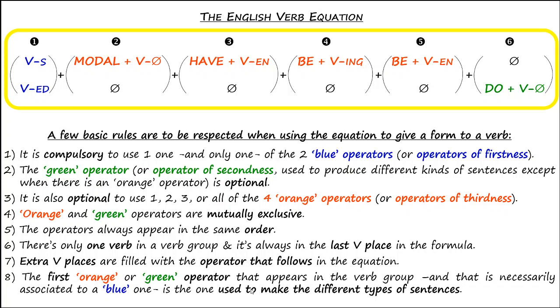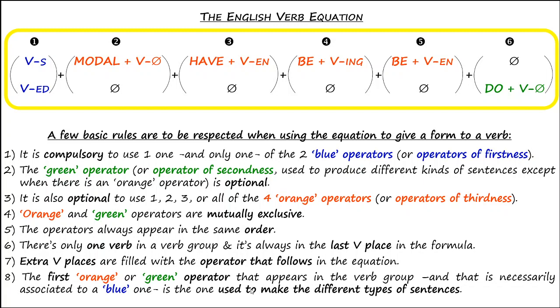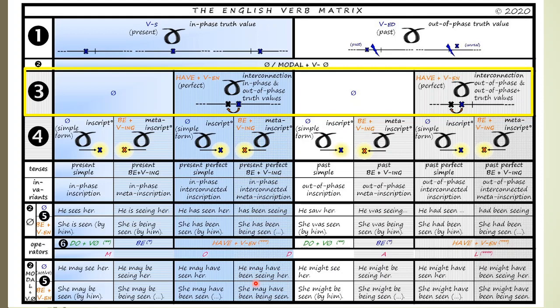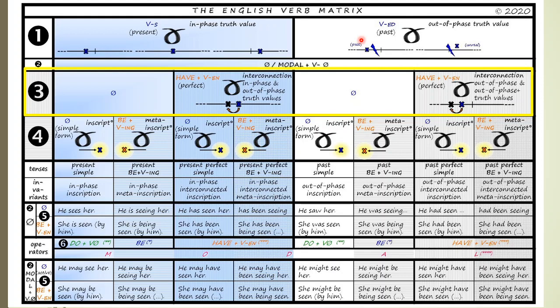This is an exhaustive list of all the operators used in simple sentences in English, and we're referring to them using symbols like VS for the present or VED for the past tense. All these operators always appear in the same order, which is the order of the English verb equation — the expression at the basis of the English verb matrix. Whenever you give a form to a verb, you first need to choose whether you're going to use the present tense or the past tense. The second step for basic tenses is: am I using the perfect or not? This is what we're working on in this video — the present perfect simple, the present perfect B+ING, the past perfect simple, and the past perfect B+ING.